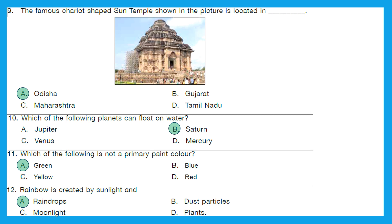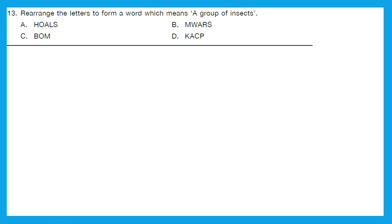Option A is the right answer for question 12. Question 13: Rearrange the letters to form a word which means a group of insects. If you already know what a group of insects is called, this is easy. A group of insects is called a swarm. Option A gives us 'shoals,' option B gives us 'swarm,' option C gives us 'mob,' and option D gives us 'pack.'